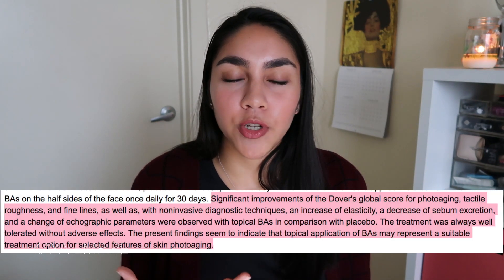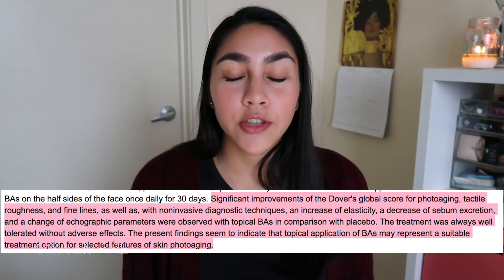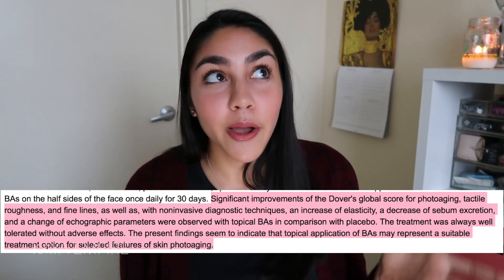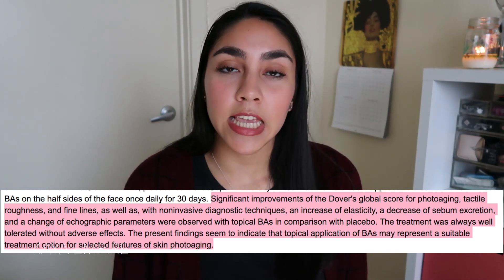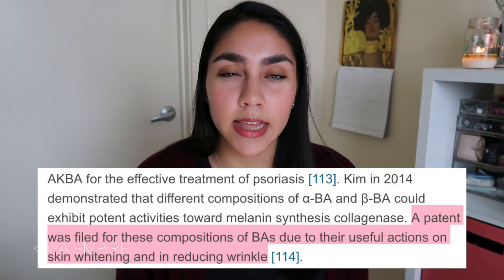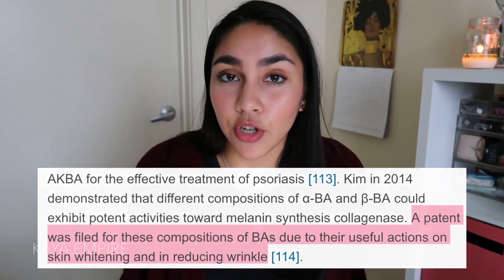The next ingredient is boswellic acid, and it also inhibits tyrosinase activity. This is a really cool and underrated ingredient you've probably never heard of. It's a great treatment for photo-aged skin — I'll show a study on screen that demonstrates how boswellic acid helps to improve texture, fine lines, wrinkles, and hyperpigmentation. The overall takeaway is that boswellic acid may represent a suitable treatment option for features of skin photo aging. I've also read studies showing it really helps with psoriasis. The product I recommend is the Visiva Retinol and Frankincense Restorative Oil Serum — this serum literally works overnight miracles.